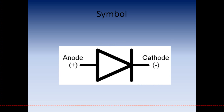The symbol of the diode is given by this rectangular shape and this line in front of it. This side is the anode, that is the positive side. This side is the cathode, the negative side.